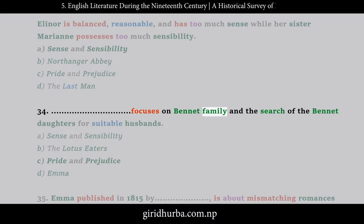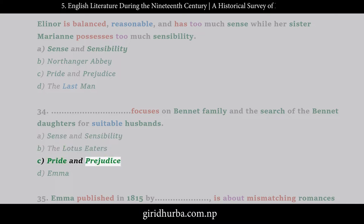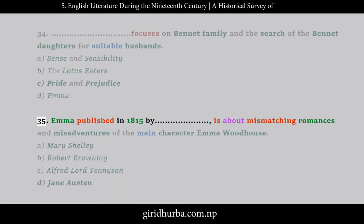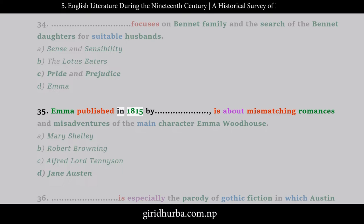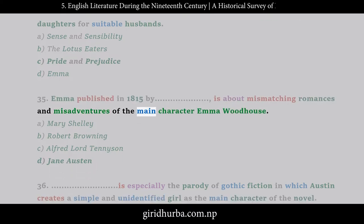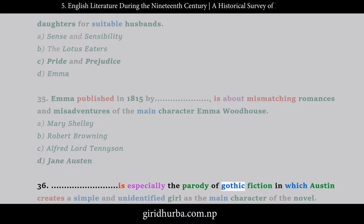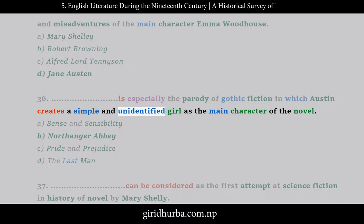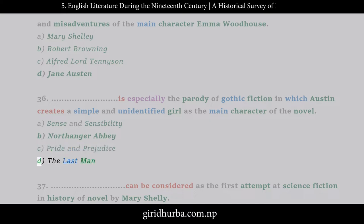Question 34: __ focuses on the Bennett family and the search of the Bennett daughters for suitable husbands. A. Sense and Sensibility, B. The Lotus Eaters, C. Pride and Prejudice, D. Emma. Question 35: Emma, published in 1815, by __ is about mismatching romances and misadventures of the main character Emma Woodhouse. A. Mary Shelley, B. Robert Browning, C. Alfred Lord Tennyson, D. Jane Austen. Question 36: __ is especially the parody of gothic fiction in which Austen creates a simple and unidentified girl as the main character. A. Sense and Sensibility, B. Northanger Abbey, C. Pride and Prejudice, D. The Last Man.